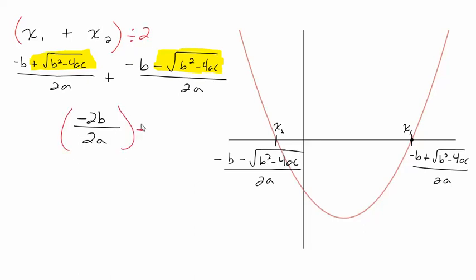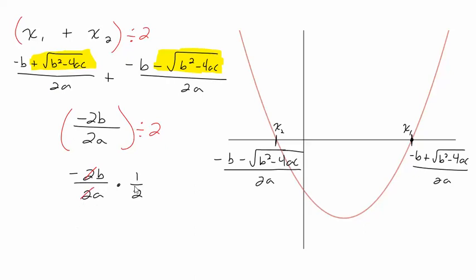To find the average, we divide that result by 2. Dividing by 2 is the same as multiplying by one-half. So we have negative 2b over 2a times one-half. The 2s reduce, and we get negative b over 2a. That's as simple as it gets.